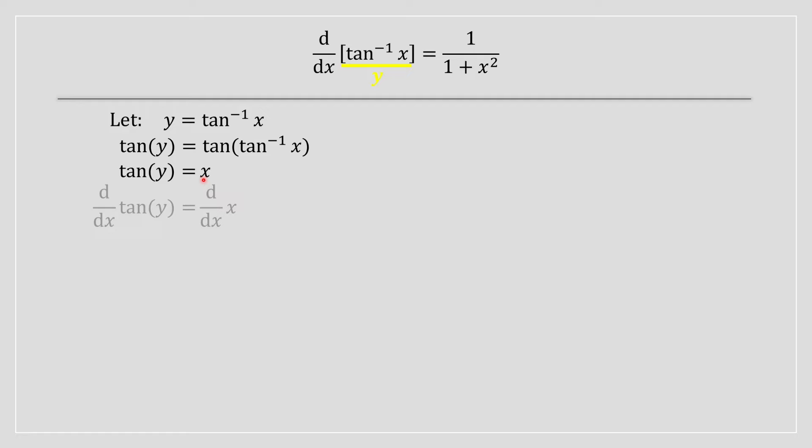On the right hand side, the derivative of x equals 1. On the left hand side, it's more complicated because we have a function within a function, so we apply the chain rule.